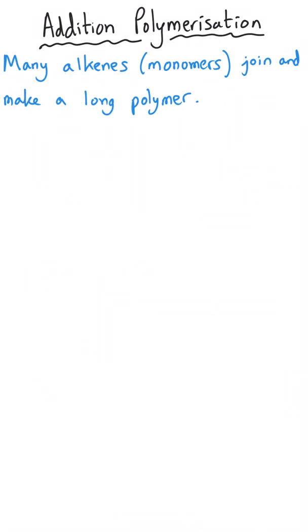Another reason why alkenes are really, really useful is they can carry out a particular type of addition reaction called addition polymerization. Polymerization is where lots of small molecules called monomers, mono being one, joined together to make one big long molecule called a polymer. Poly meaning many, so myr is parts. So the monomers have got one part and the polymers have got many parts all joined together.